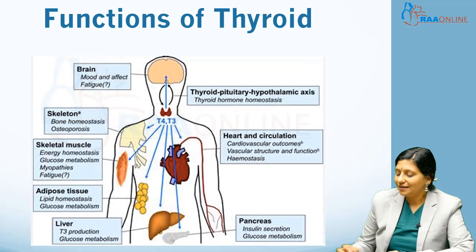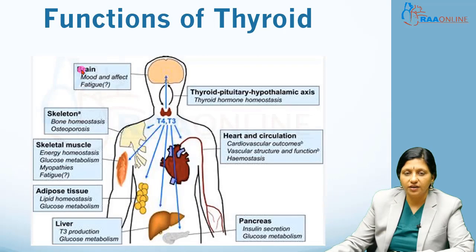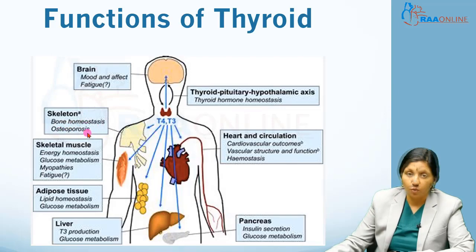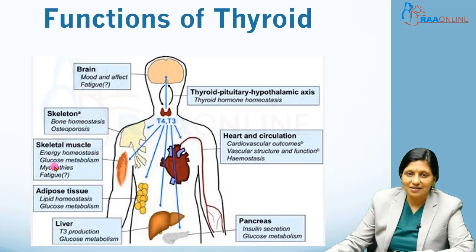The thyroid has various functions in the human body. In the brain it has a function of mood, affect, and fatigue. In the skeletal system the thyroid helps in bone homeostasis and osteoporosis. In the skeletal muscle the thyroid has a function in energy homeostasis, glucose metabolism, myopathies, and fatigue.